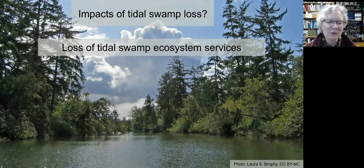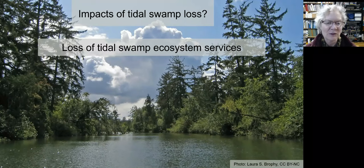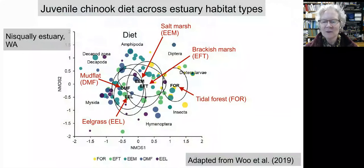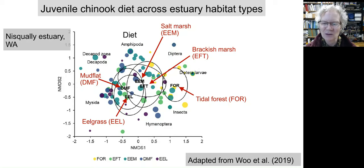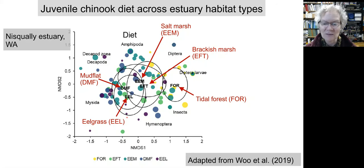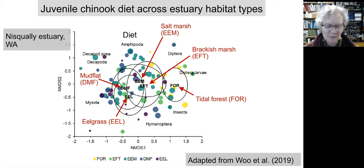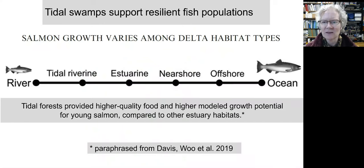So what have been the impacts of these swamp losses? Obviously the loss of ecosystem services, particularly those unique to tidal swamps. This NMDS analysis from Isa Wu and colleagues in the Nisqually Estuary of Washington shows how juvenile Chinook salmon diets varied across different tidal wetland habitat types. Each dot represents one or more sampled fish, and the circles and arrows refer to the different habitat types where the fish were captured. Fish foraging in mudflats and eelgrass trended towards mysids and decapods; those in salt marsh and brackish marsh towards amphipods; and fish foraging in tidal forests had a distinctly different diet, trending towards insects including flies and wasps. Melanie Davis, Isa Wu, and colleagues found that tidal forests provided higher quality food and higher growth potential for young salmon compared to other estuary habitats.